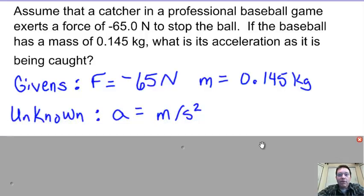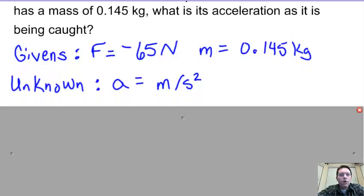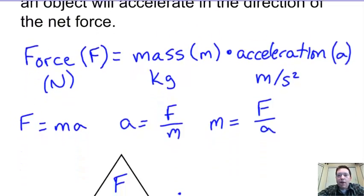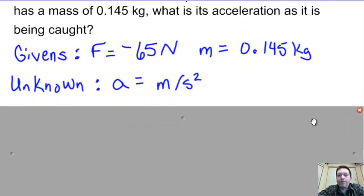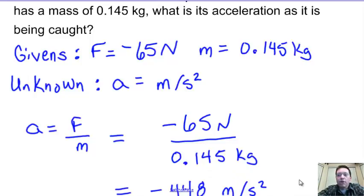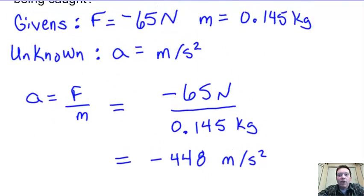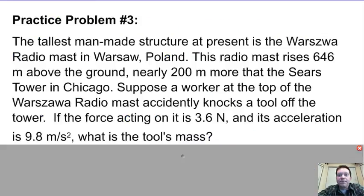I'm solving for acceleration, so I can solve for acceleration by taking force divided by mass. Acceleration equals force divided by mass: plugging in negative 65 Newtons for force and 0.145 kilograms for mass, I get a value of negative 448 meters per second squared.